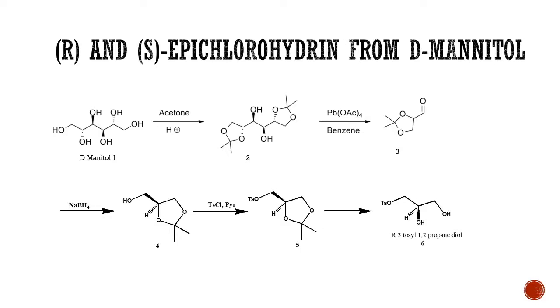D-mannitol is a cheaply available starting material which has 6 OH groups and it's a long-chain hydroxy alkane. D-mannitol is in the sugar, and it was then treated with acetone in presence of catalytic amount of H plus.